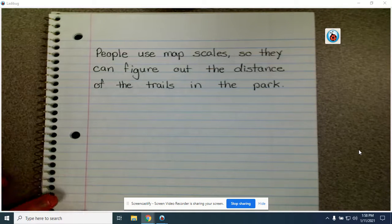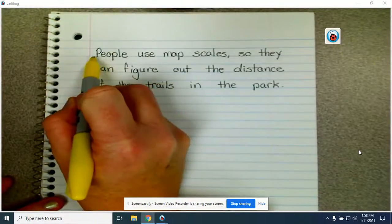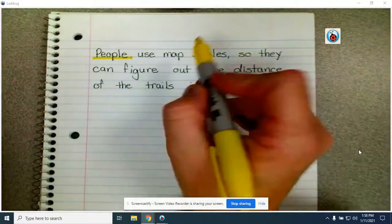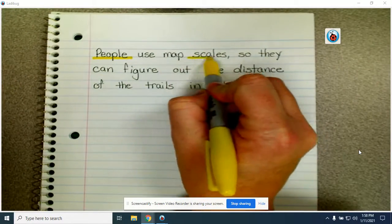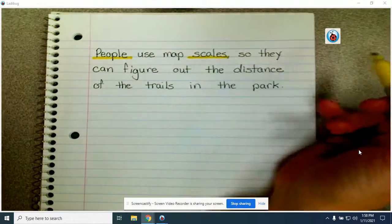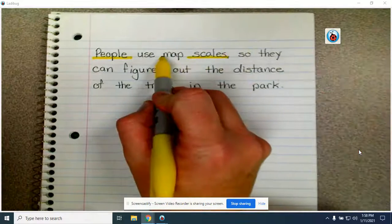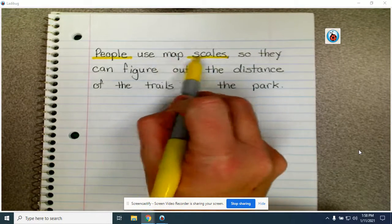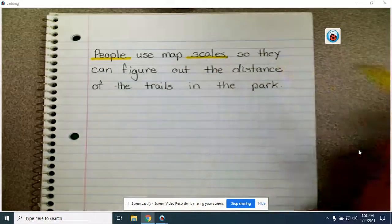So let's underline all of the nouns in our sentence. People is a noun. Scales is a noun. That's a thing. Map scales. Map is a word that describes what type of scale, so it's not part of the noun. We just underlined the noun.